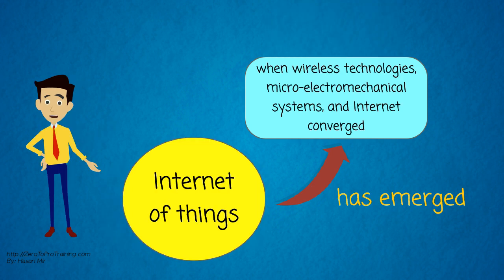Internet of Things has emerged when the following three fields converge together: wireless technologies, micro-electromechanical systems, and the Internet itself.